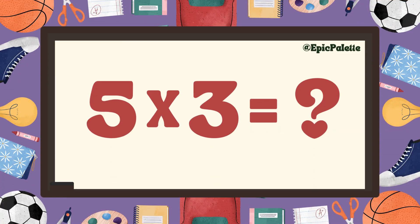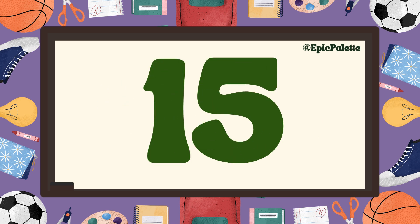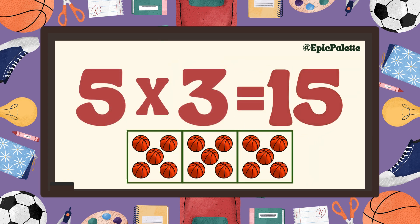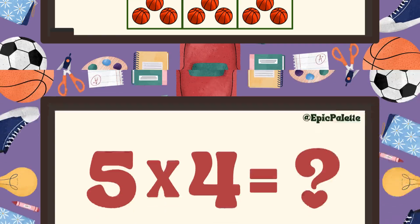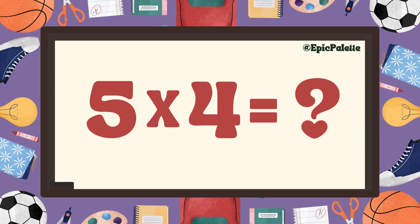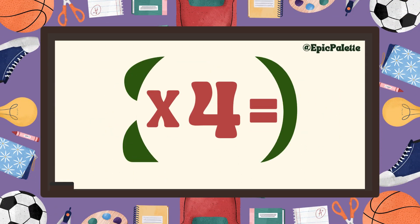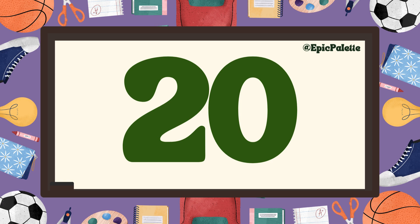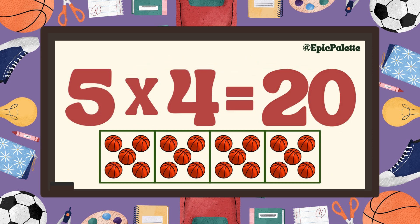Five times three equals... Fifteen. That's right. Five times three equals fifteen. Excellent. Five times four equals... Twenty. That's right. Five times four equals twenty. Excellent.